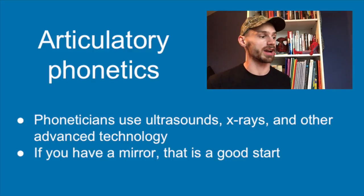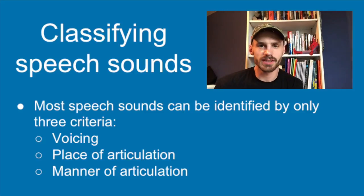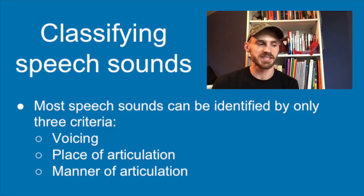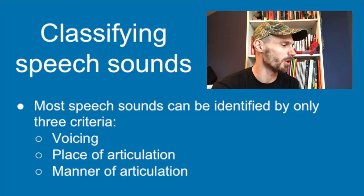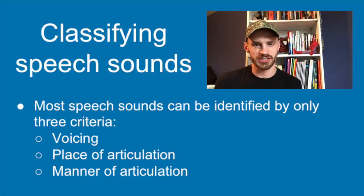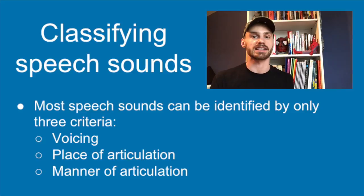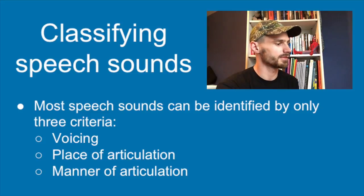Most human speech sounds can be classified with just three criteria: voicing status, place of articulation, and manner of articulation. If you know each of these criteria for a given speech sound, then you know exactly what that speech sound is. We're going to go over each of these in more detail now.